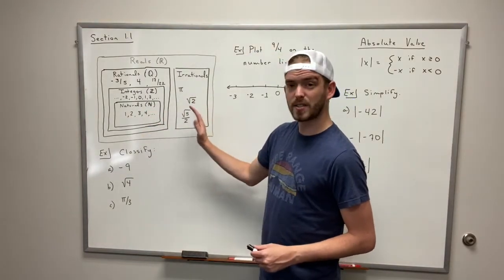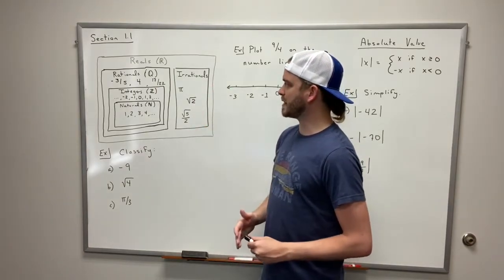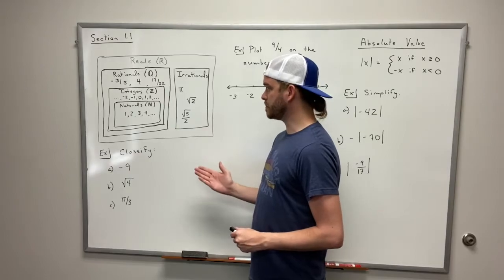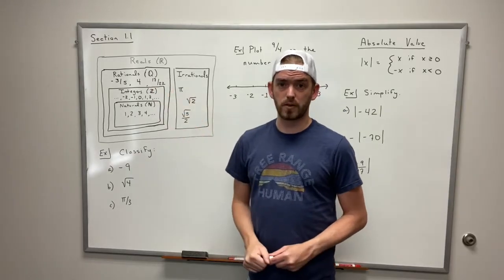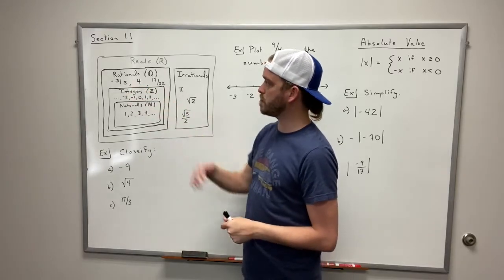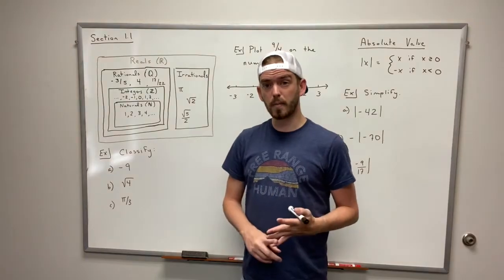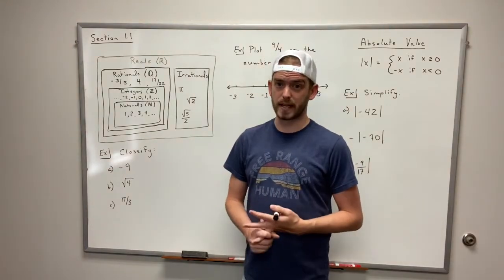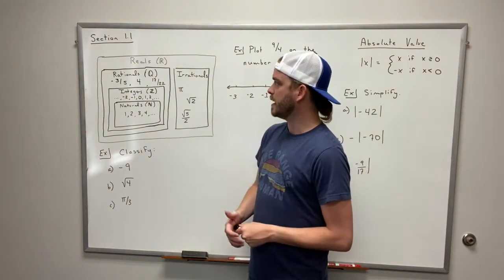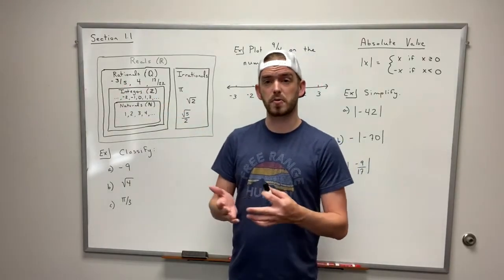On the other side kind of by itself we have the irrational numbers. Now these are numbers that cannot be represented as a ratio of two integers. Another way you can tell the difference between the two if you make a rational number into a decimal it's either going to stop or it's going to repeat. If you think negative three-fifths if we put that in decimal form that would be negative 0.6.